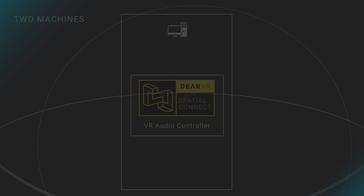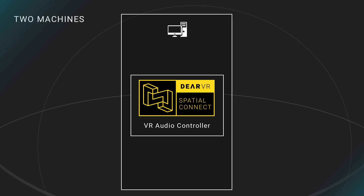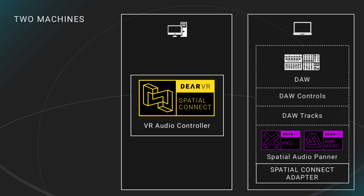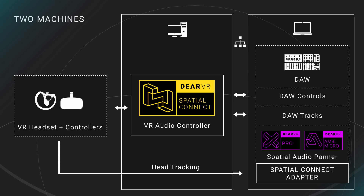The other possibility is to install Spatial Connect on your VR PC and connect it via a common network with your audio workstation. This connection can either be your home WLAN network or a tethered LAN cable. The two-machine setup is especially useful if you want to keep a dedicated audio workstation and add a second machine as your VR PC extension. So if your audio workstation isn't VR-ready, don't worry — all you need is to set up a network connection to a Windows PC supporting your VR goggles and run Spatial Connect on that computer.